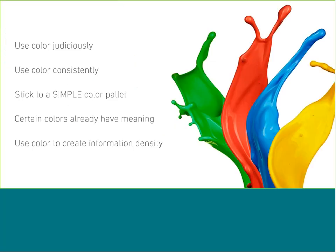I touched on using color briefly before, but just some tips: use color judiciously, use it consistently, and stick to something simple. Color should not be distracting from the visualization — it should be adding to it. It's not the star of the show; the data is always going to be the star of the show. The color is there just to enhance what's important about the particular visualization. Remember that certain colors already have meaning — use those inherent meanings in your favor. Don't try to make something red be something good. Everyone knows red is bad, red is a warning. And you can also use color to create information density.